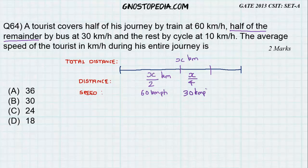So this is 30 kmph and similarly the rest by cycle at 10 km per hour. Now let's calculate the time for each of the distances covered.